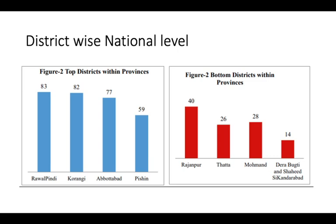At the district level, the highest school attendance is in the federal capital Islamabad at approximately 85-87%. Top districts are Rawalpindi, followed by Korangi in Sindh, Abbottabad in KPK, and Pishin in Balochistan. The bottom districts include Rajanpur in Punjab, Thatta in Sindh, and Dera Bugti and Shaheed Sikandarabad in Balochistan, where only 28 and 14 out of 100 individuals have ever attended school.